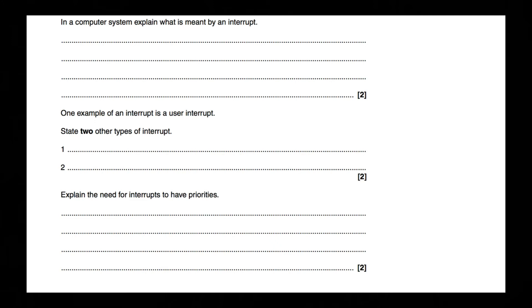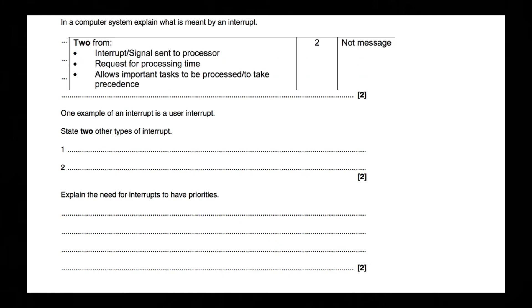For 'explain what is meant by an interrupt' — do not include the word 'message'. Do not say it is a message. You need to say: a signal sent to a processor, a request for processing time, and allows important tasks to be processed or to take precedence.